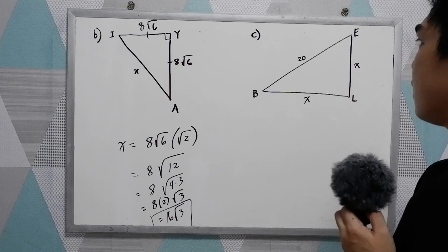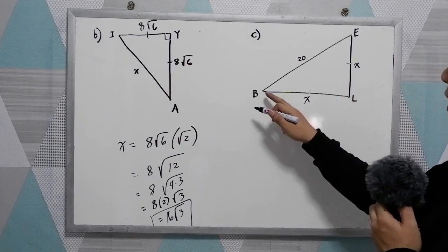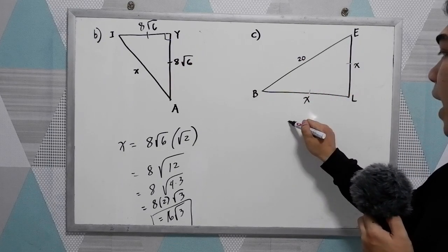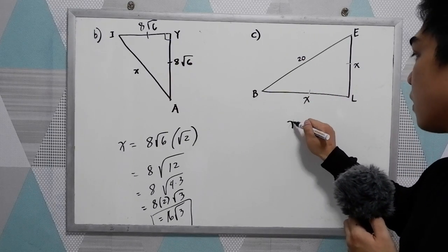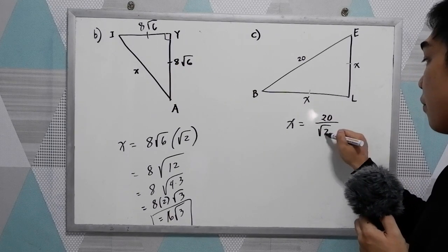In this case, we need to find X, the leg, given the hypotenuse. So X equals 20 divided by √2.